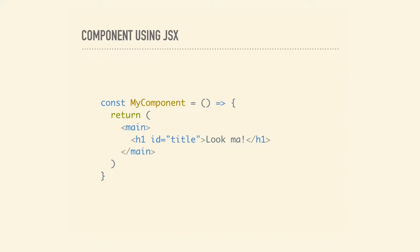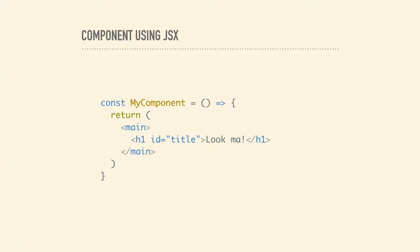A super simple component — if you've written any functional components, this is very familiar to you. We have our main element, an H1 with an ID of 'title', and we return it. When a component runs, React creates an instance of the component. Think state, think props — it's this constant living organism. That's a component instance. The instance consumes its props, deduces state, and returns what's known as an element.